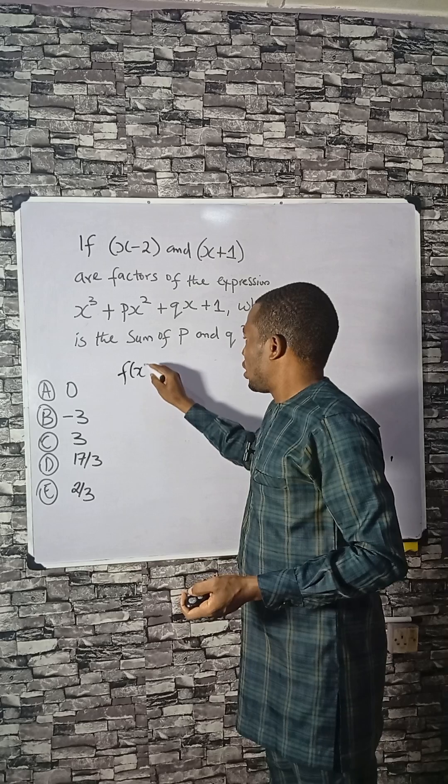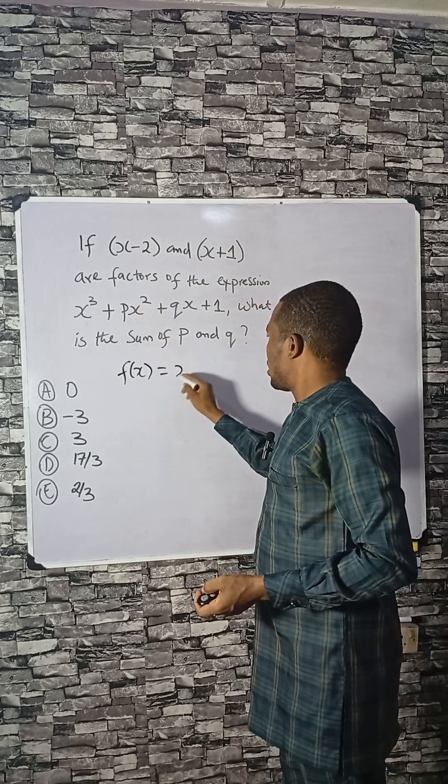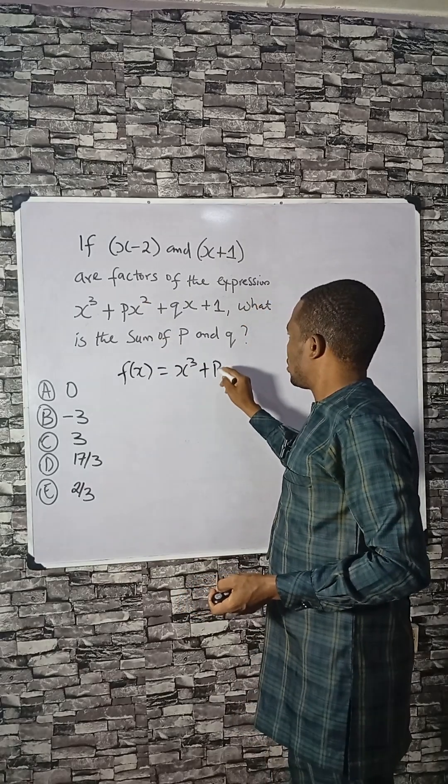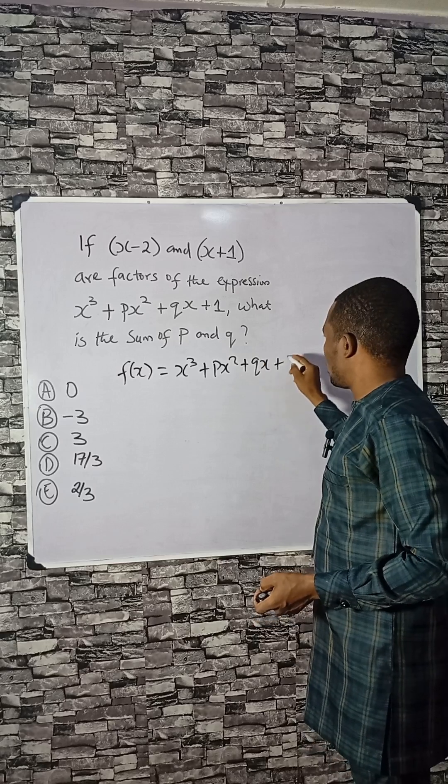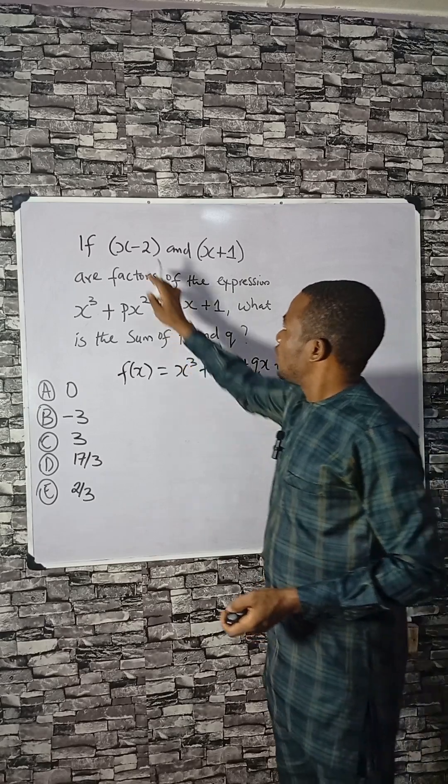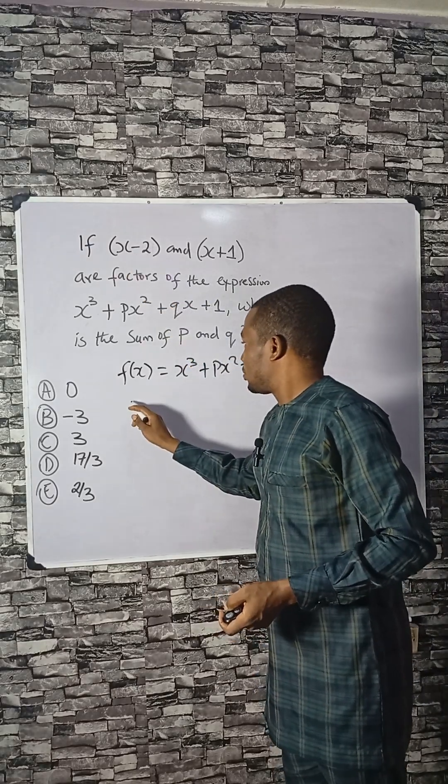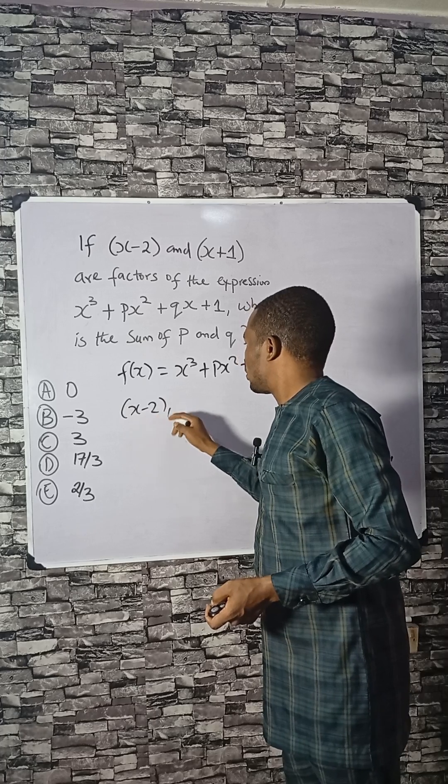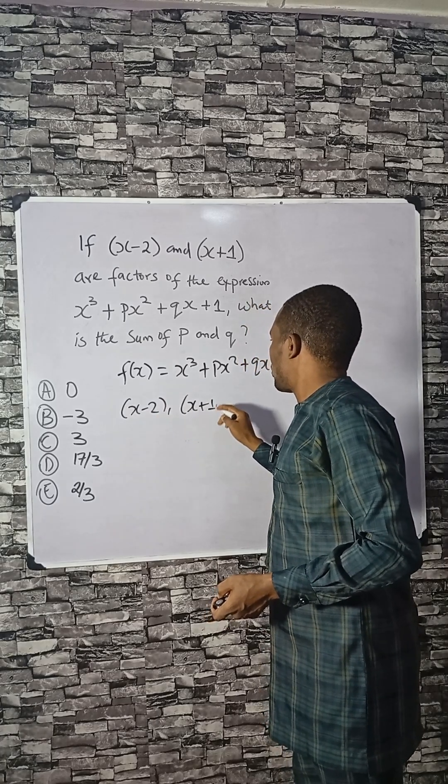So f of x is x cubed plus p x squared plus qx plus 1. Then the two factors are x minus 2 and x plus 1.